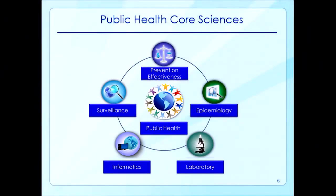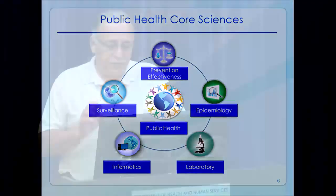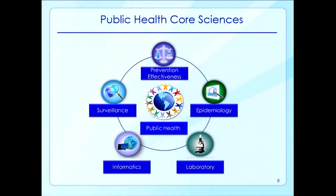Public health depends on core sciences: prevention effectiveness, epidemiology, laboratory, informatics, and surveillance. This chart is not just a picture — it's also directional, going counterclockwise. Surveillance and informatics are very closely tied, because both are about data collection, analysis, and definition of the problem we are encountering. They form the basic science for the public health approach.